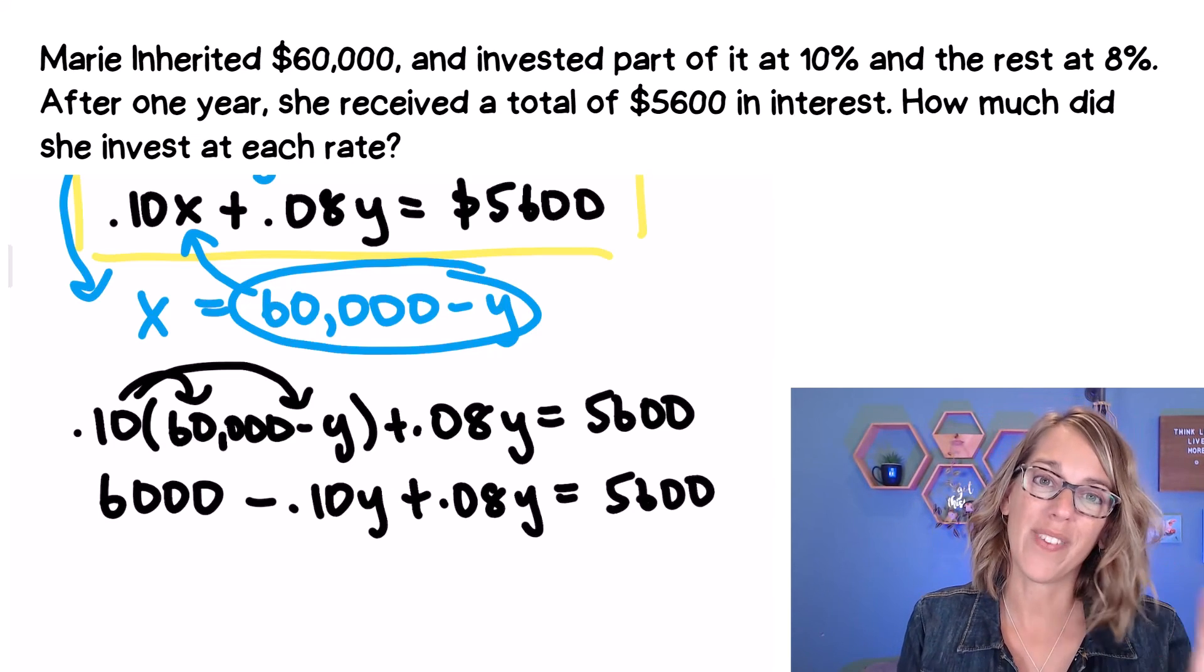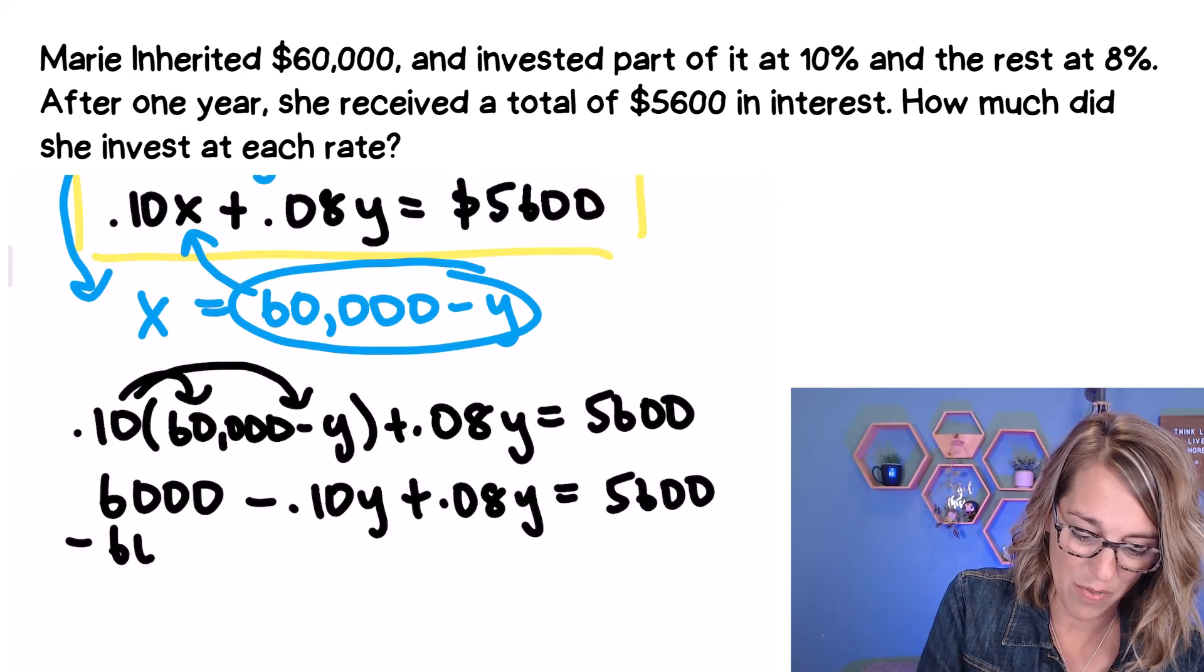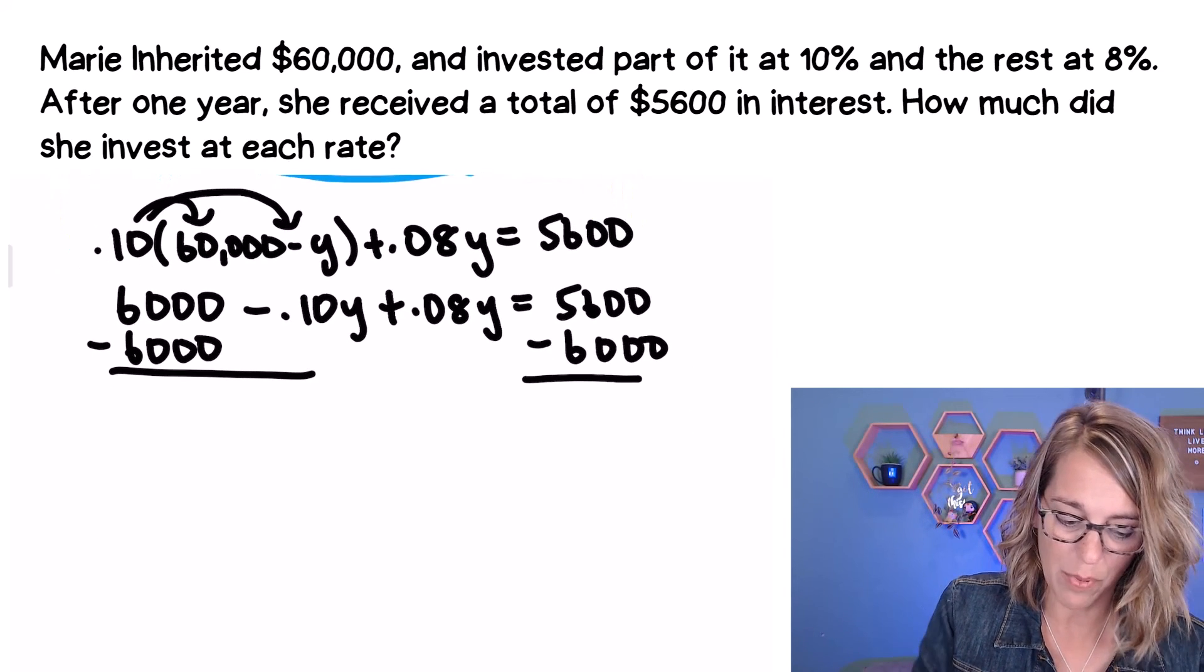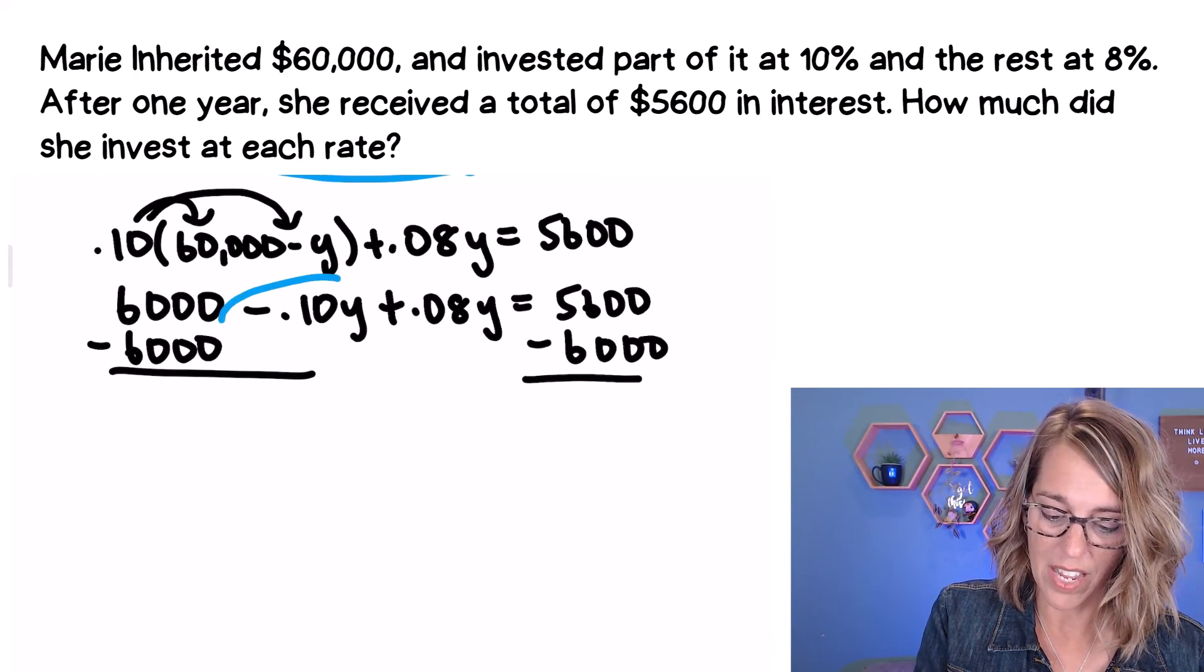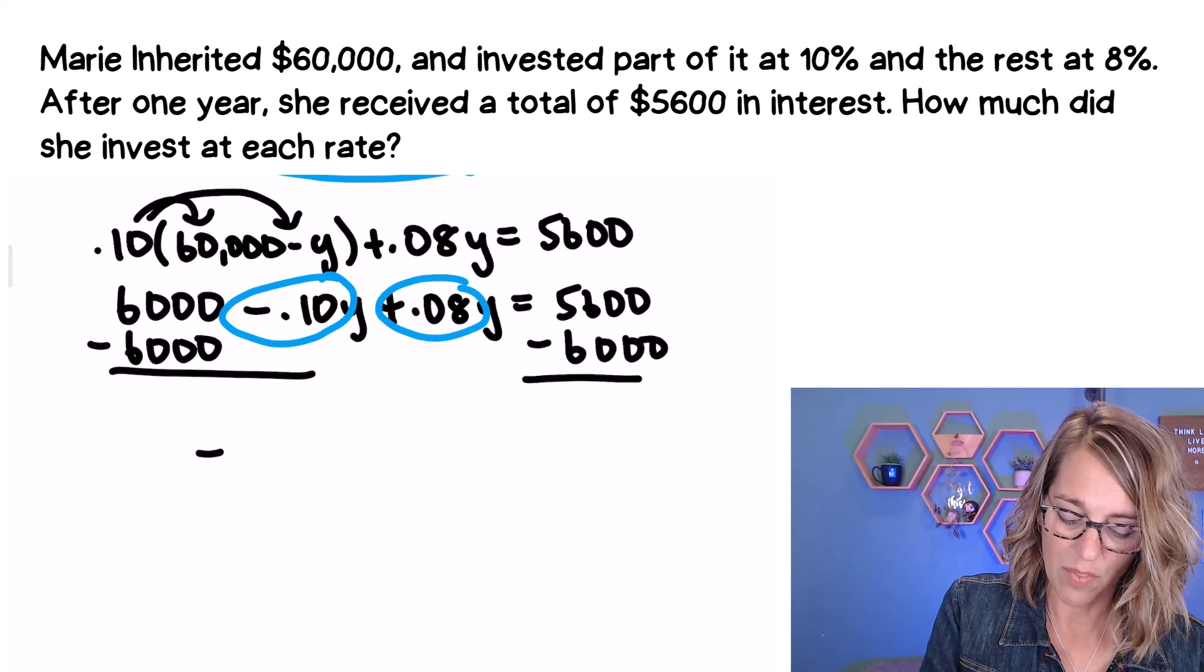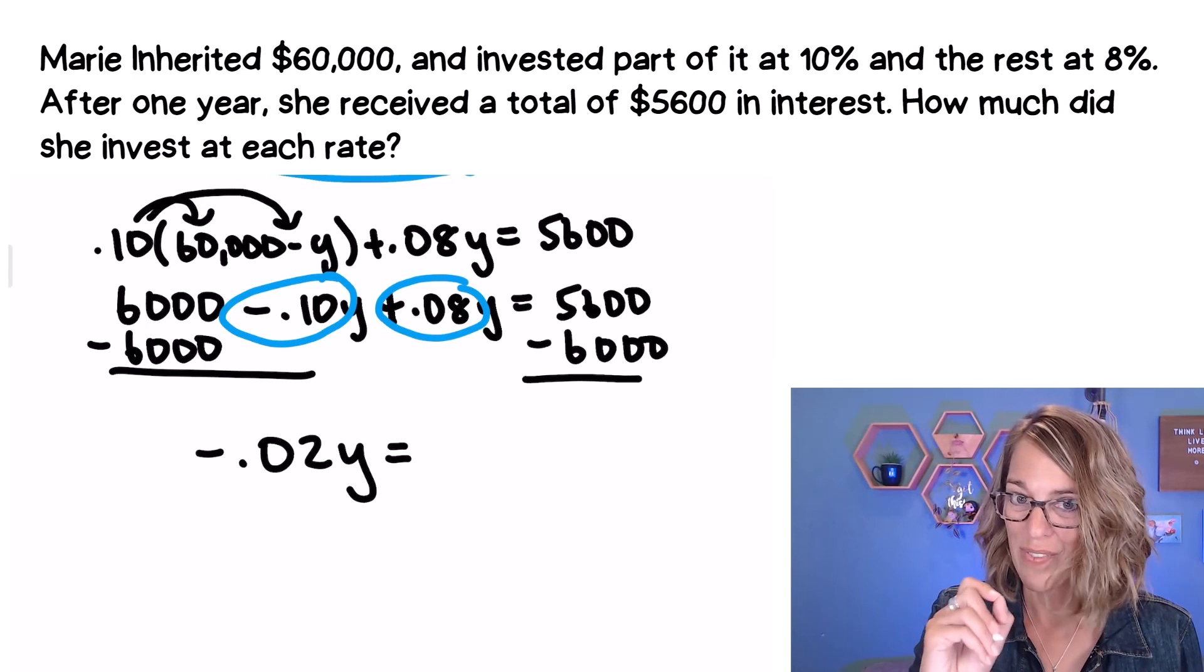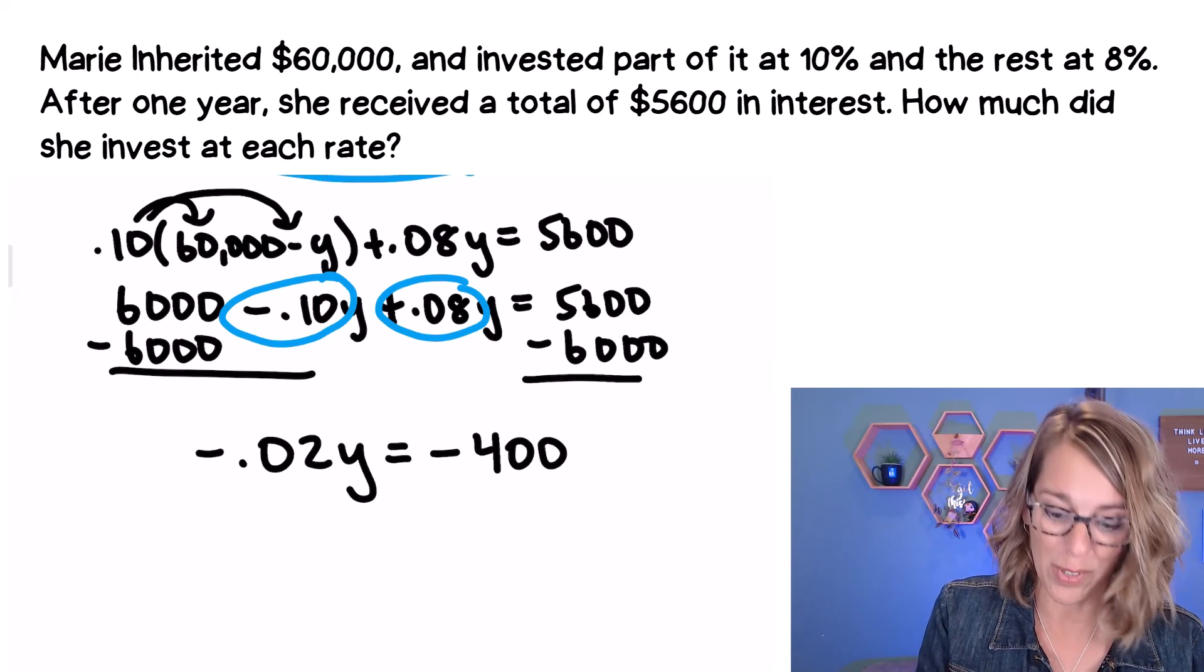I want to get my variables on one side and my numbers on the other. So let's move that 6,000 over. Subtract the 6,000. So it's looking good because I'm going to end up with just my Y terms. So these Y terms, as I combine the negative 0.10 and the 0.08, I get negative 0.02Y is equal to 5600 minus 6,000. Their difference is 400 and I need a negative sign in front. So negative 400. Almost there.